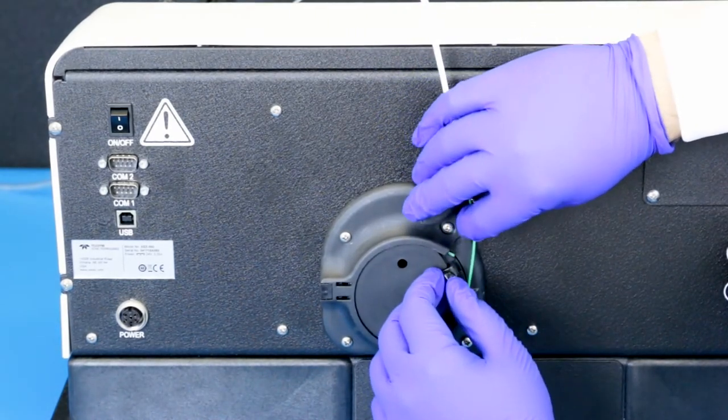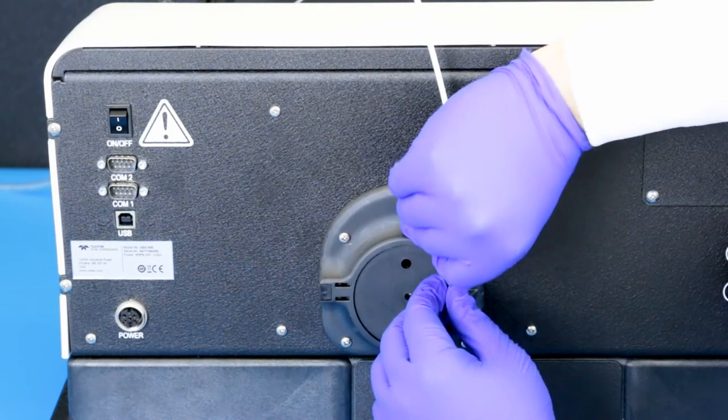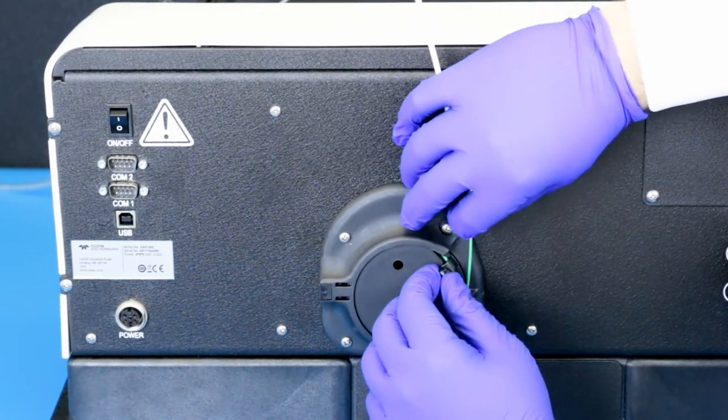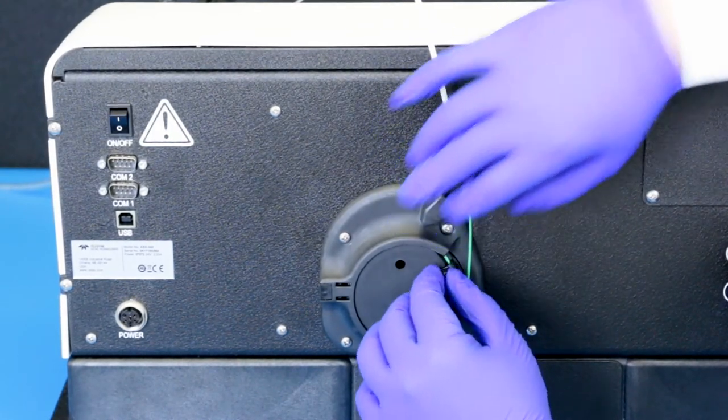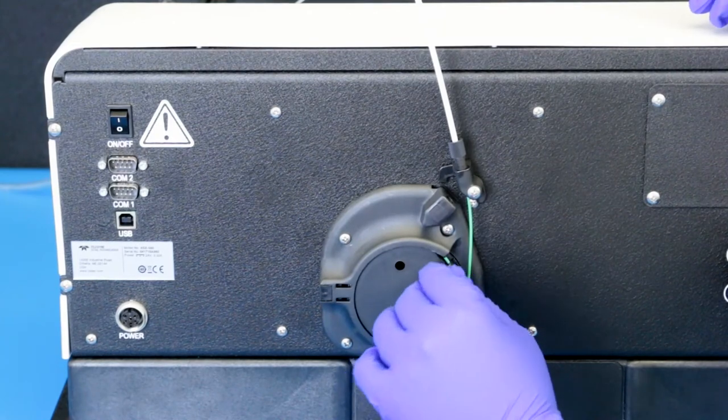Position the cable so about two millimeters of cable extends past the clamp. Hold the cable against the rotor and secure by finger tightening the thumbscrew.